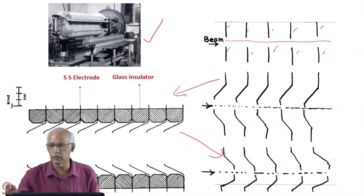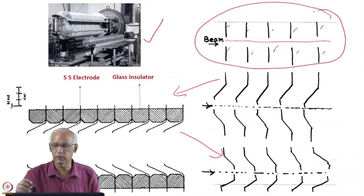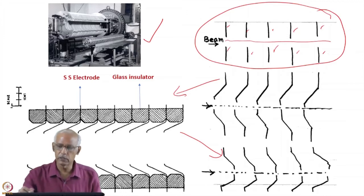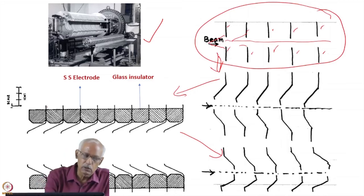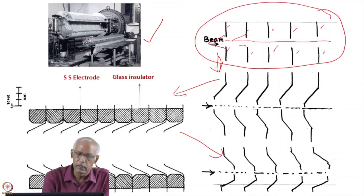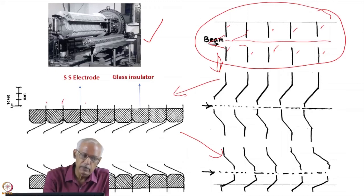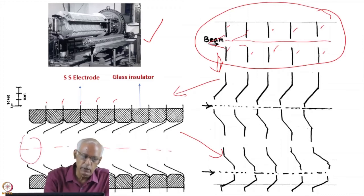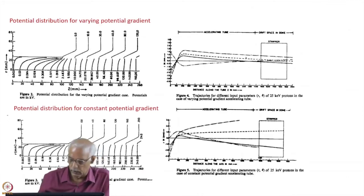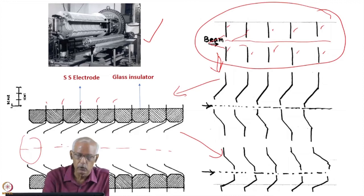Prior to these findings, most of the literature used accelerating tubes in one orientation, and the transmission was not very good. When these electrodes were changed to the other orientation, the transmission increased remarkably. The electrodes are stainless steel separated by glass insulators. You calculate the potential distribution in the region where the beam is traveling, so you calculate the field distribution in that region and then calculate the trajectories along it.